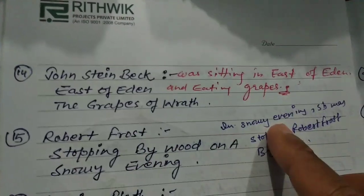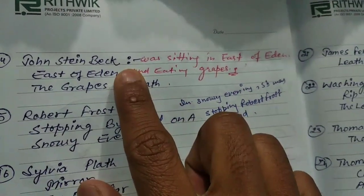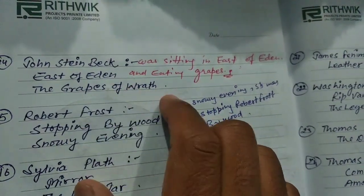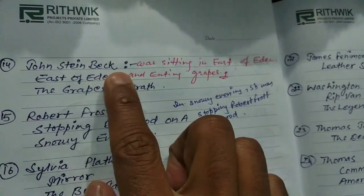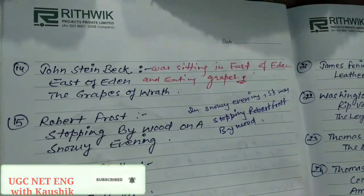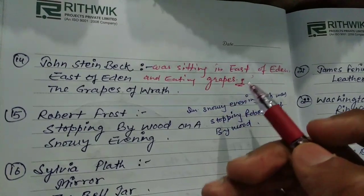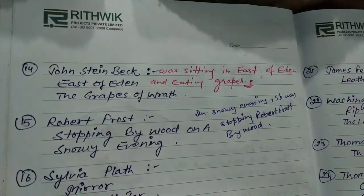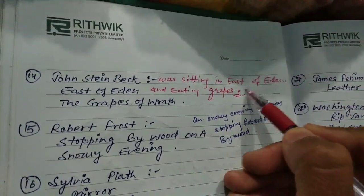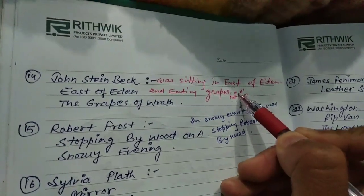John Steinbeck — his two important works are East of Eden and The Grapes of Wrath. Imagine John Steinbeck sitting in the East of Eden and he was eating grapes. You can see he is sitting here in East of Eden and he was eating grapes.